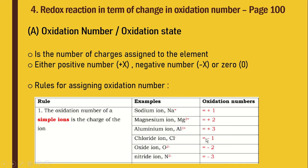The same goes for anions. For example, chloride ion is −1. When it is just minus, it means −1. Nitride ion N³⁻ has oxidation number −3.